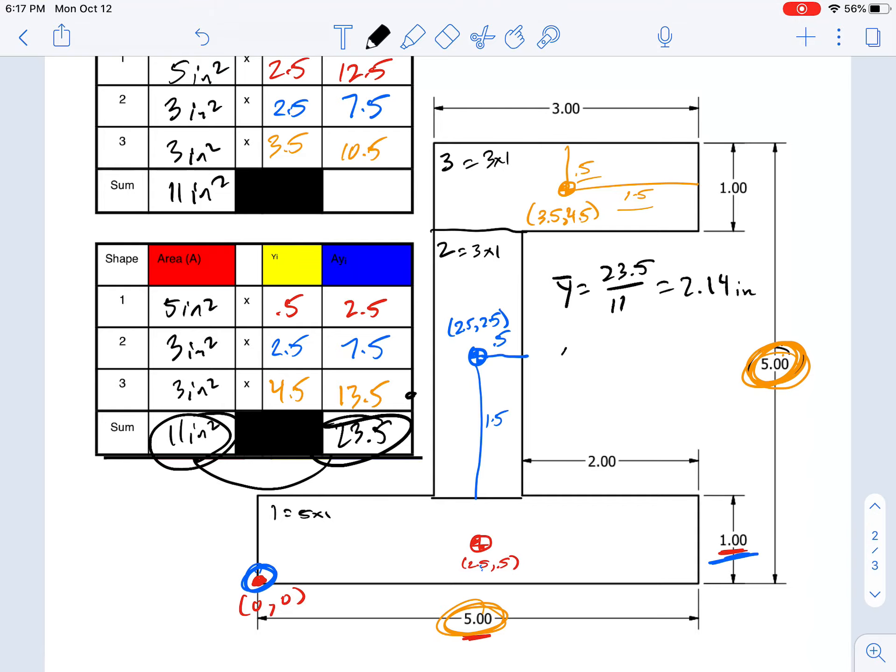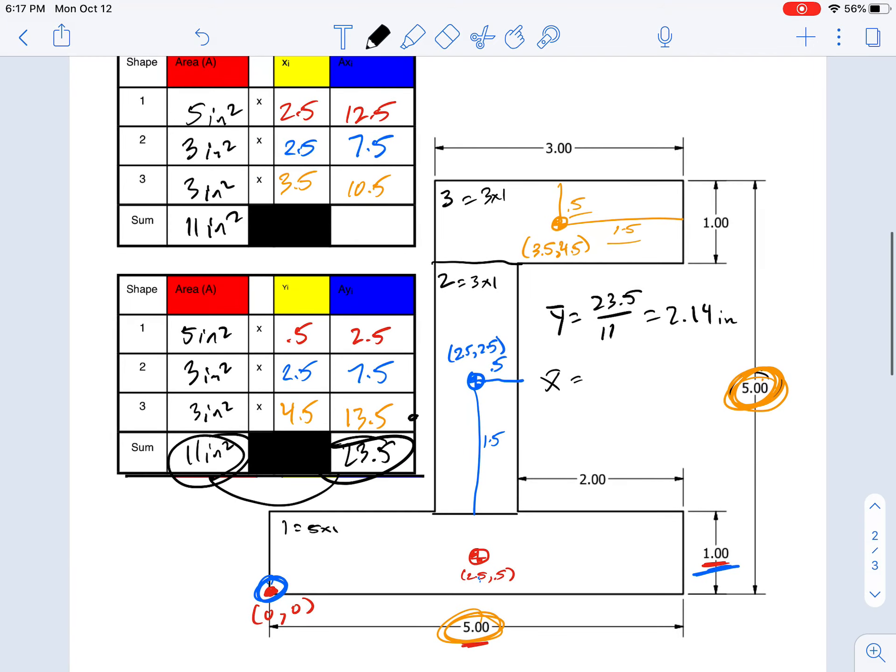And the x location, if we add these up, 12.5 plus 7.5 is 20, plus 10.5 is 30.5. And 30.5 divided by 11 gives us 2.77 inches.